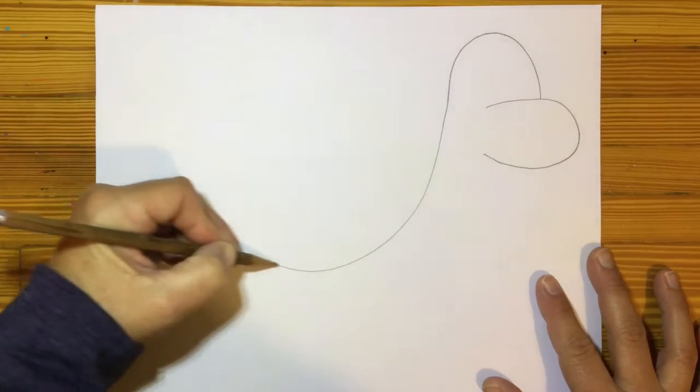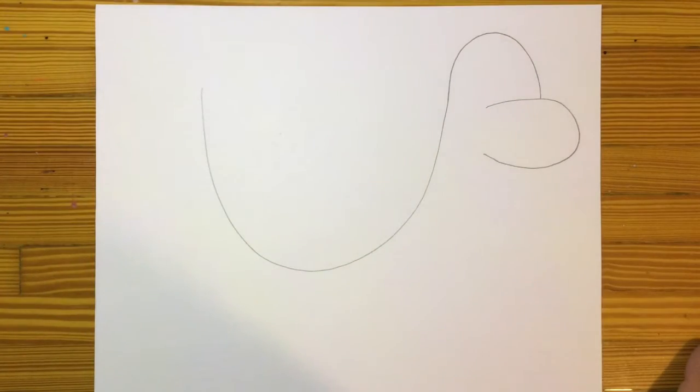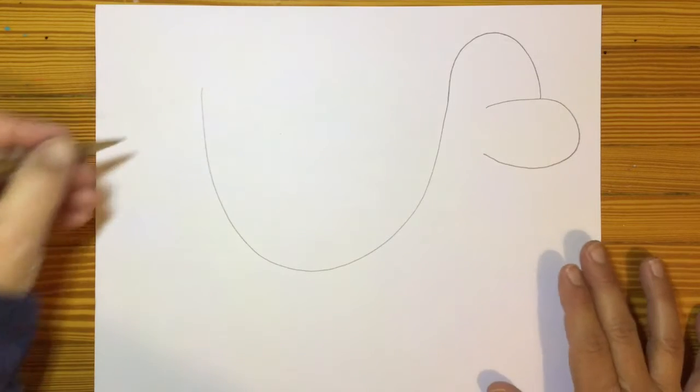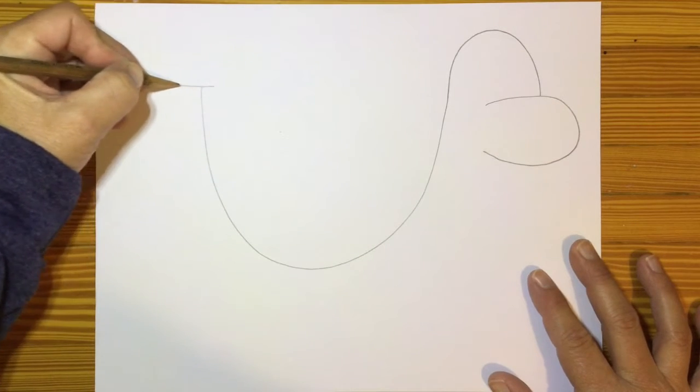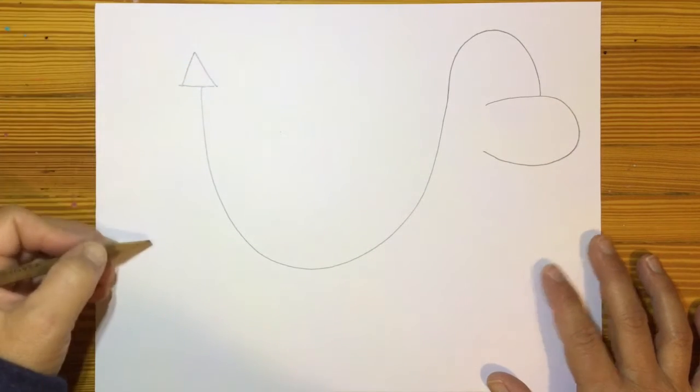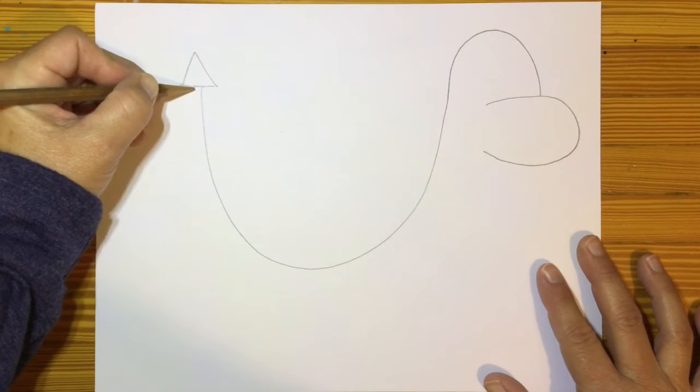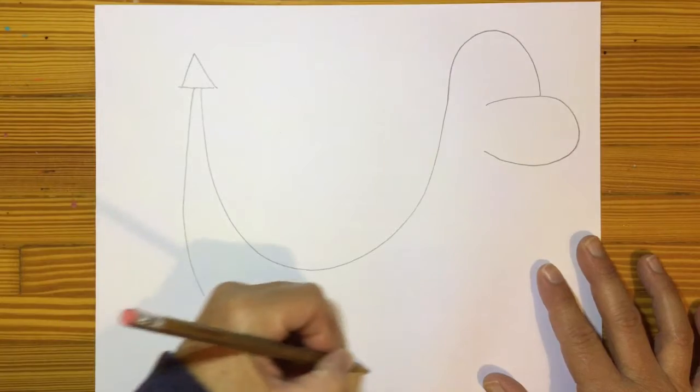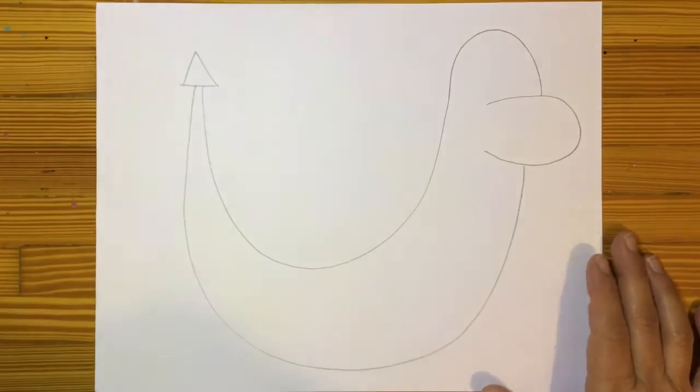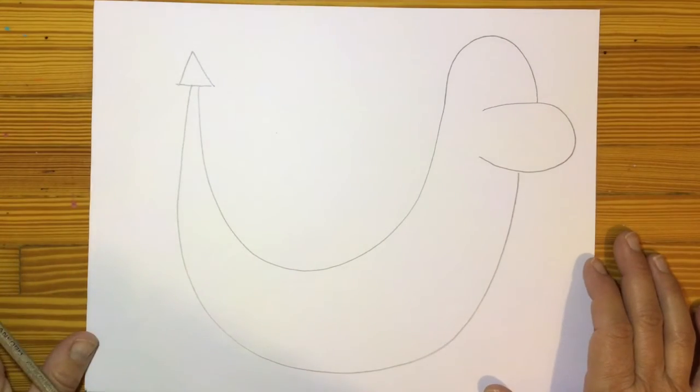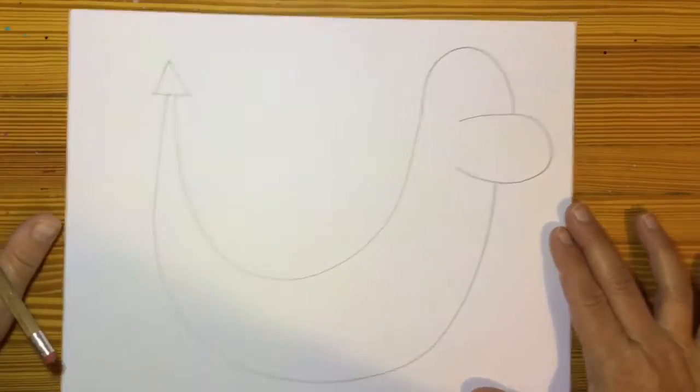We're going down and up, a big giant U. Now you need a triangle and then give it a little space and make another U.